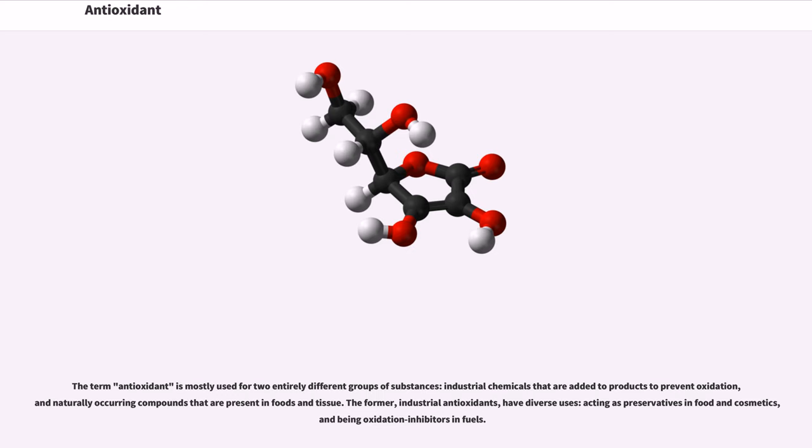The term antioxidant is mostly used for two entirely different groups of substances: industrial chemicals that are added to products to prevent oxidation, and naturally occurring compounds that are present in foods and tissue. The former, industrial antioxidants, have diverse uses, acting as preservatives in food and cosmetics, and being oxidation inhibitors in fuels.